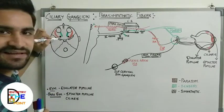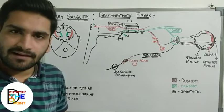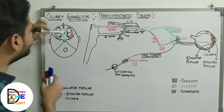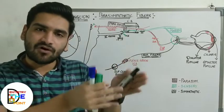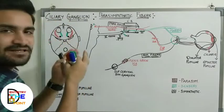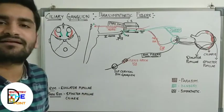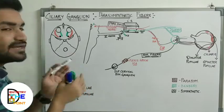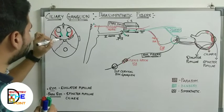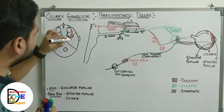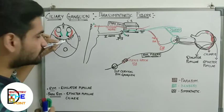The ciliary ganglion, shown as the black structure in the diagram, is related medially to the optic nerve and on the lateral aspect to the lateral rectus muscle. So it is situated between the optic nerve and the lateral rectus muscle. It is also situated just one centimeter ahead of the medial end of the superior orbital fissure.